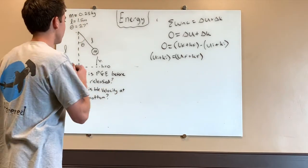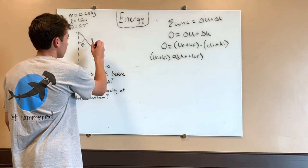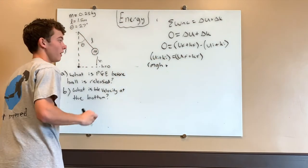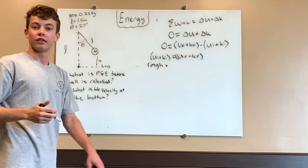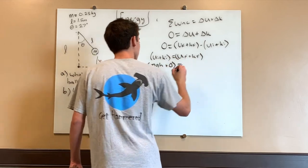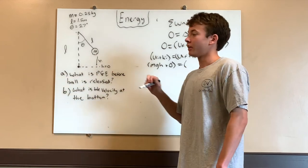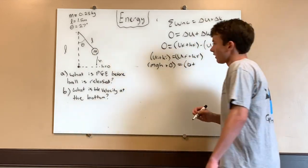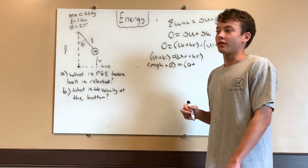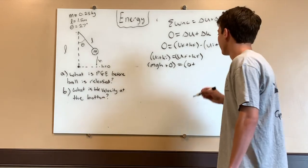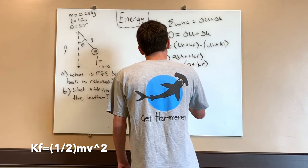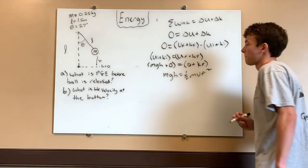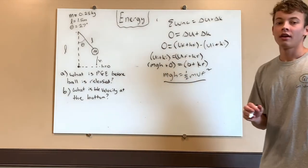Let's plug in our values. We have an initial gravitational potential energy which we found in part A, but there's no initial kinetic energy because our ball is at rest — it has zero velocity, so that term is zero. Once our ball reaches the bottom, it has zero potential energy because it has zero height, so that term is also zero. But at the bottom the ball will have kinetic energy — all of its potential energy transfers to kinetic — giving us mgh equals one-half mv_f squared.